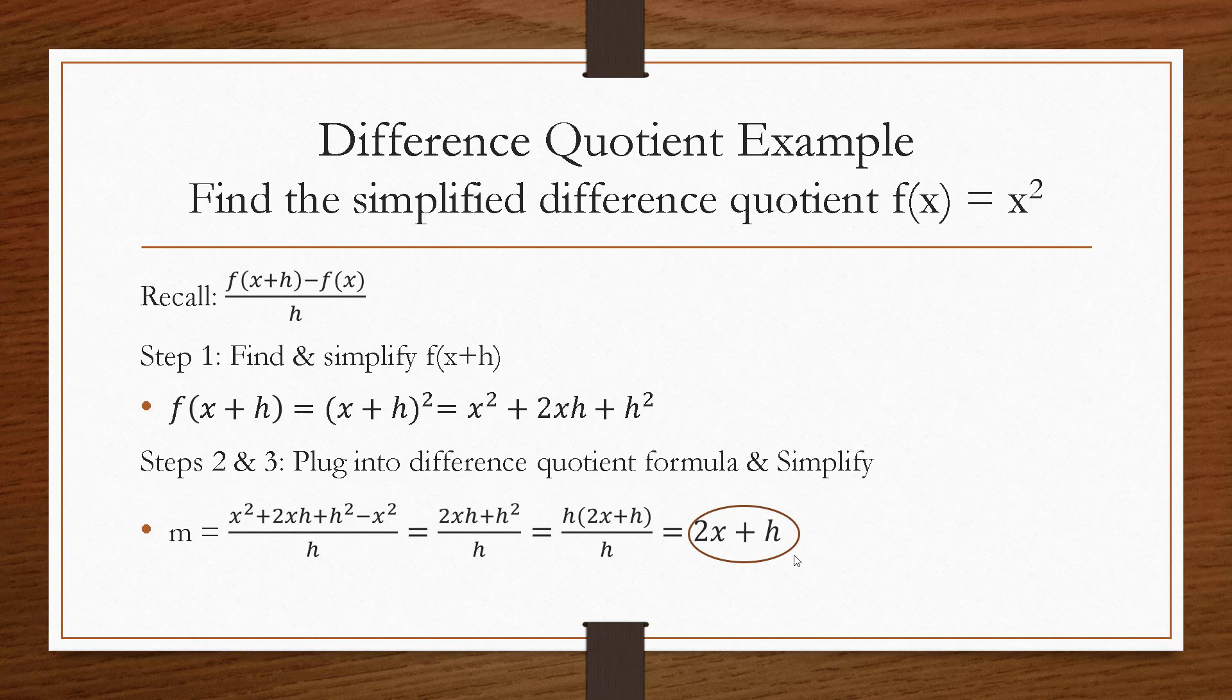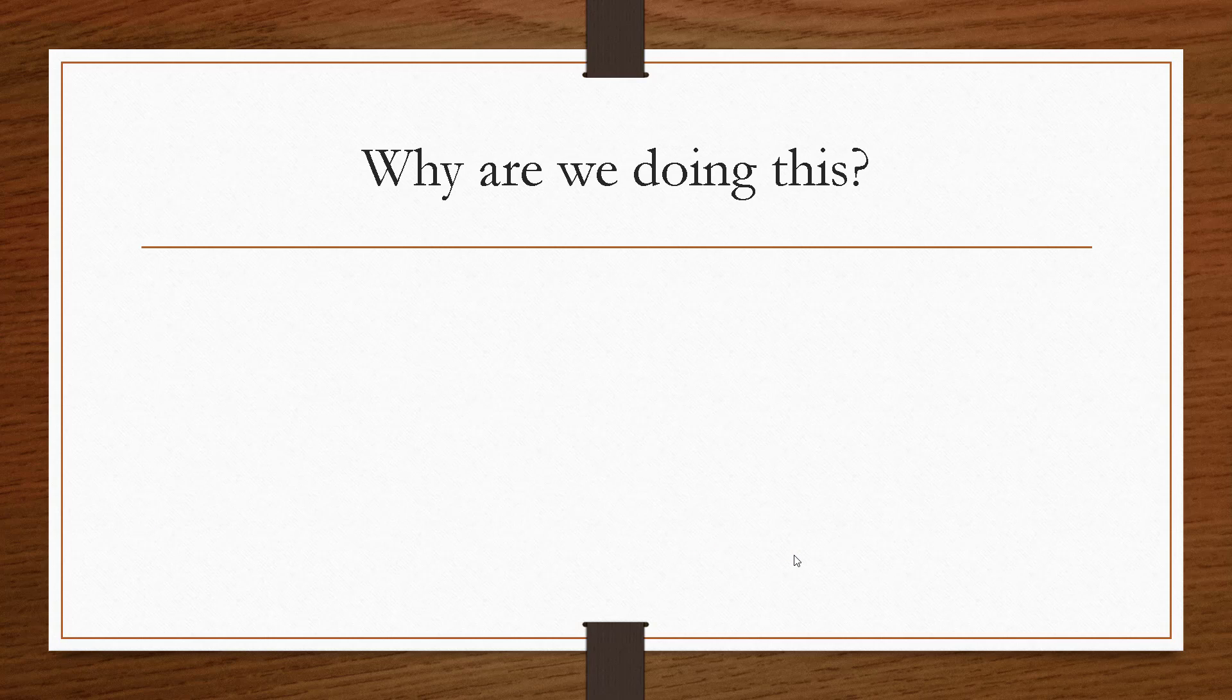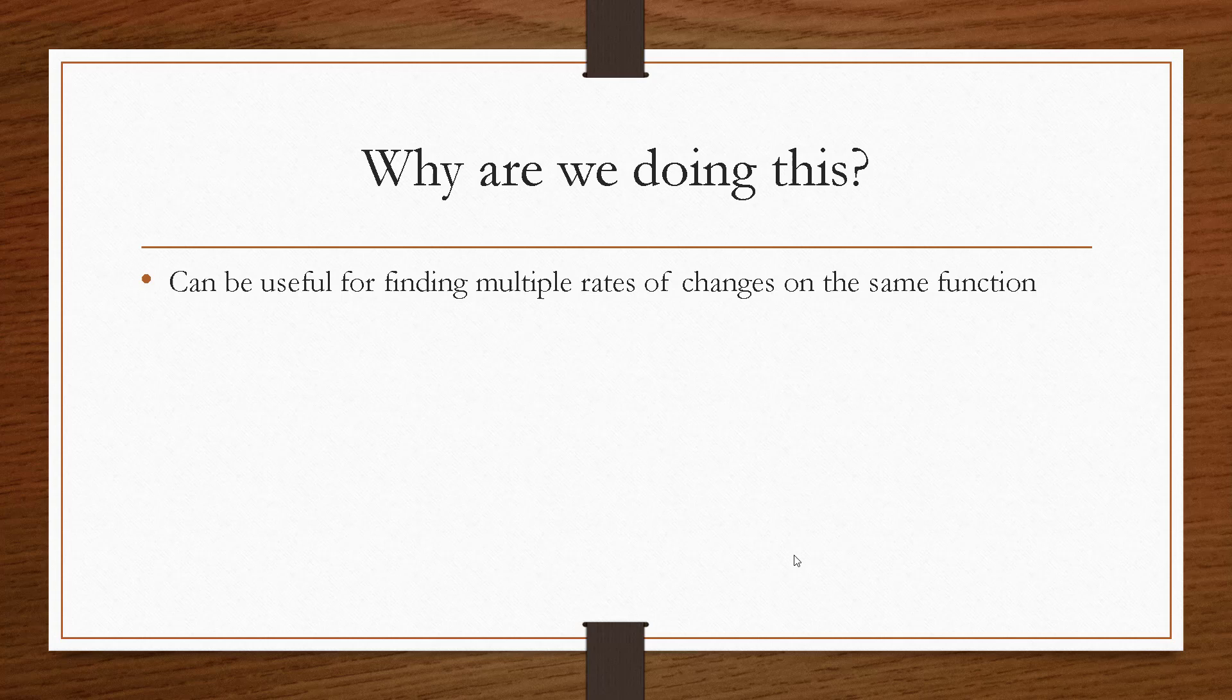And again, this difference quotient represents the slope of a secant line or an average rate of change for any given value of x and change in x, h. So why are we doing this? If it's just a slope, why are we doing it this way? Two reasons. First, that it can be useful for finding multiple rates of changes on the same function, because now you have a formula to quickly find that slope of the secant line, no matter what x and h are.